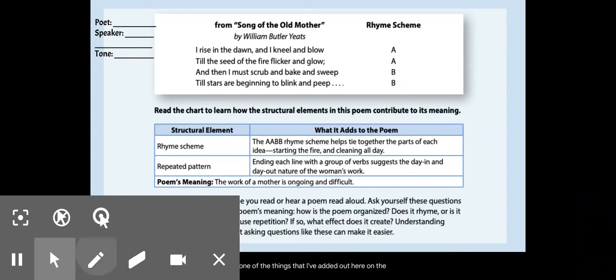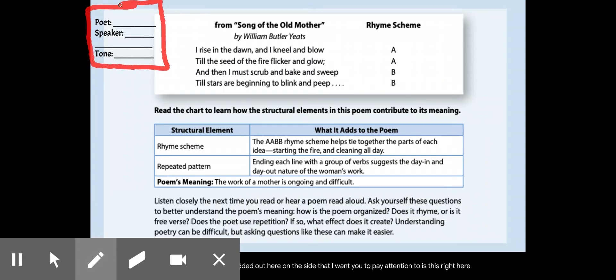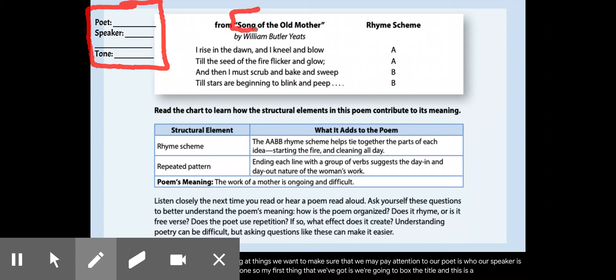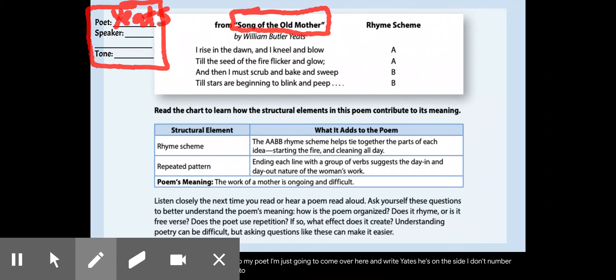One of the things that I've added out here on the side that I want you to pay attention to is this right here. So, before we get going and we're breaking down our poem and looking at things, we want to make sure that we pay attention to who our poet is, who our speaker is, and the overall tone of the poem when we get done. My first thing that we've got is we're going to box the title, and this is an excerpt from Song of the Old Mother by William Butler Yeats. My poet, I'm just going to come over here and write Yeats on the side. I don't know my speaker yet because I haven't read it, and I want to make sure you realize that the poet isn't always the speaker. And then we want to number our lines, and there are one, two, three, four, and there is no fifth line, so we've only got a four-line poem that we're looking at. And this only has one stanza.